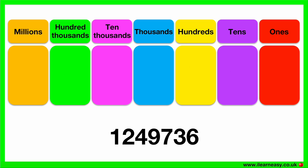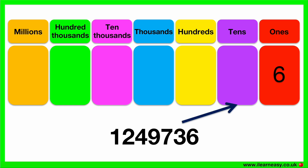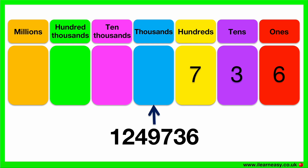Here we have a seven-digit number. Again, let's separate out the different numbers according to their place values. The number 6 goes in the ones group, the number 3 goes in the tens group, the number 7 goes in the hundreds group, and the number 9 goes in the thousands group.